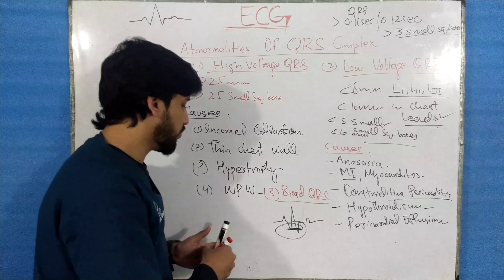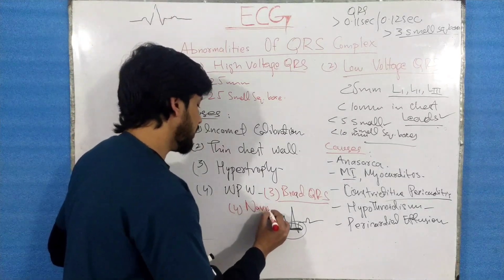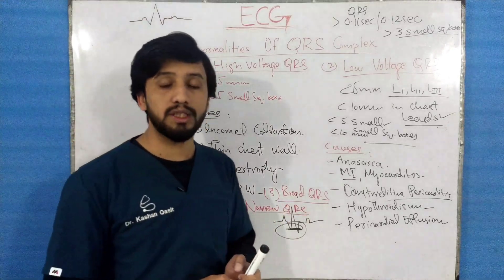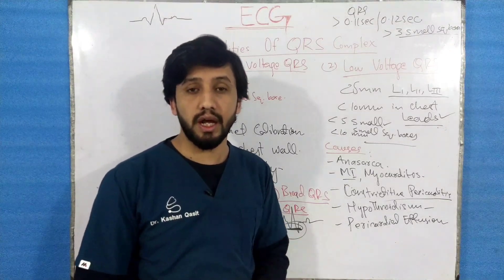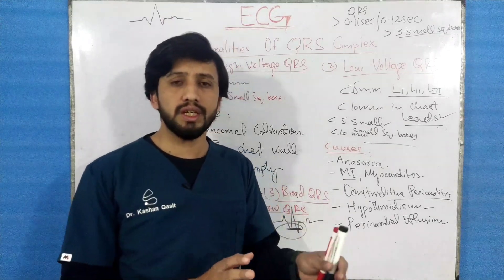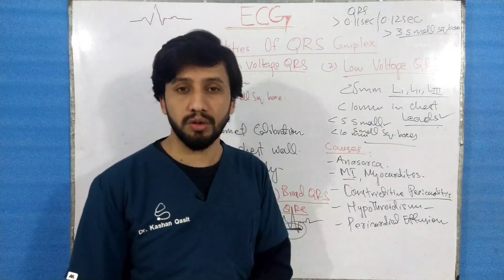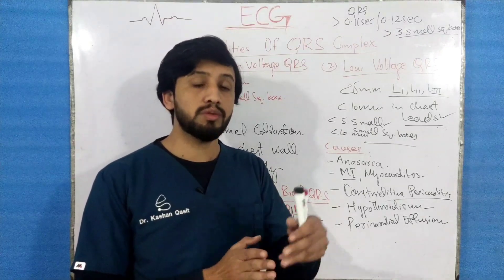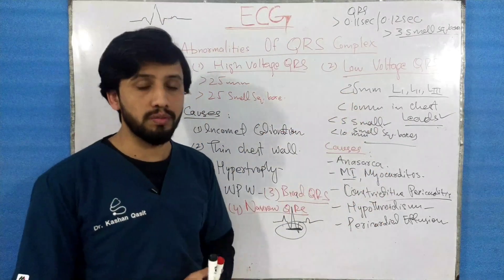Then comes the fourth abnormality, which is the narrow QRS complex. This narrow QRS complex is seen in atrial fibrillation and also in other cardiac conditions like atrial fibrillation with abnormal R-wave. Narrow QRS complex means the width is less than 3 small square boxes. These are the conditions in which you will notice the narrow QRS complex, broad QRS complex, high voltage QRS complex, and low voltage QRS complex.